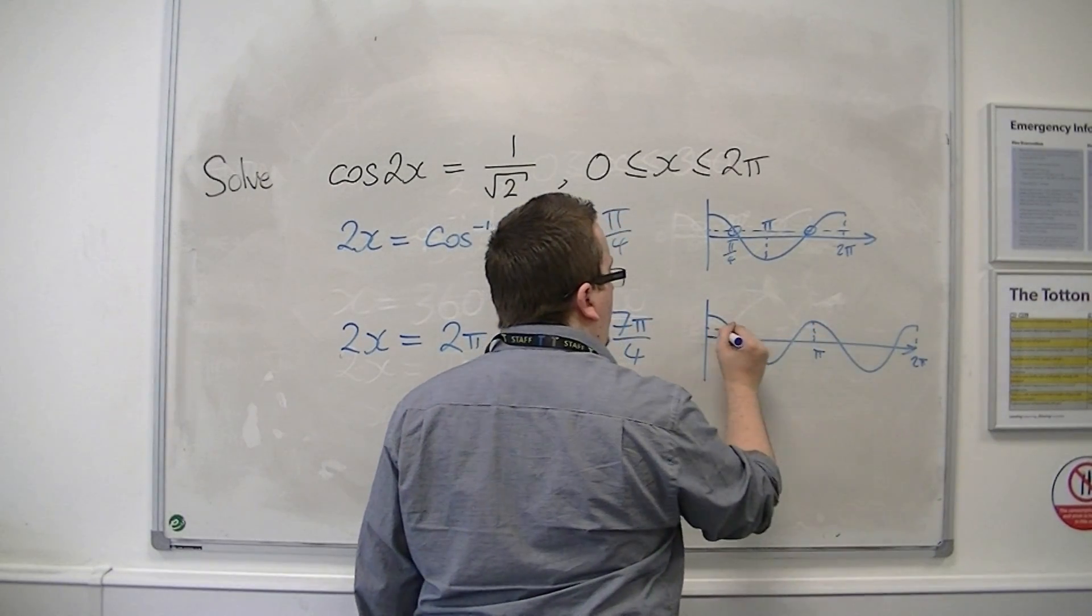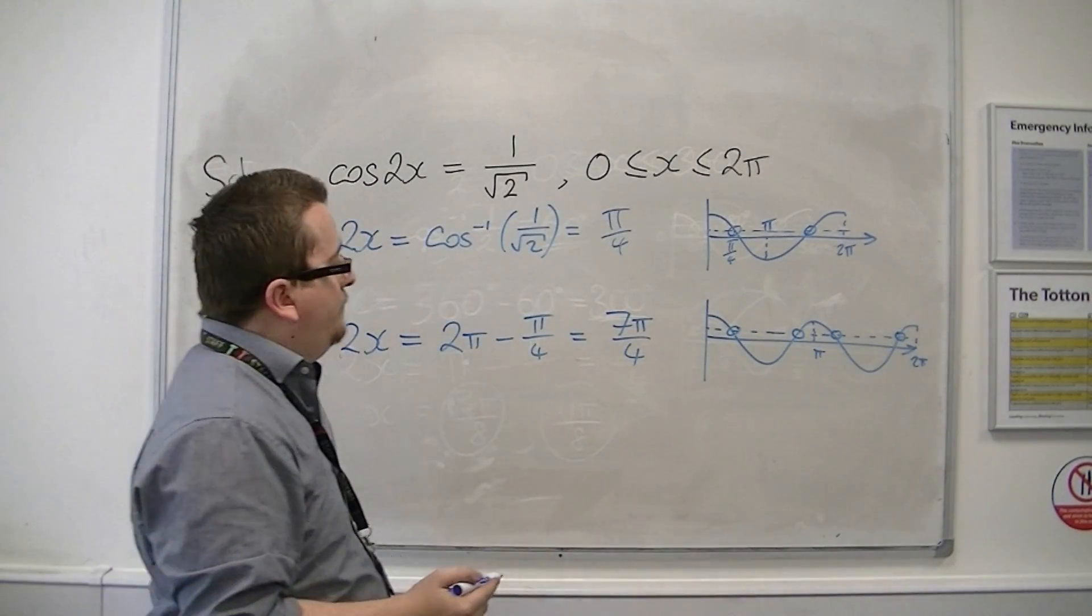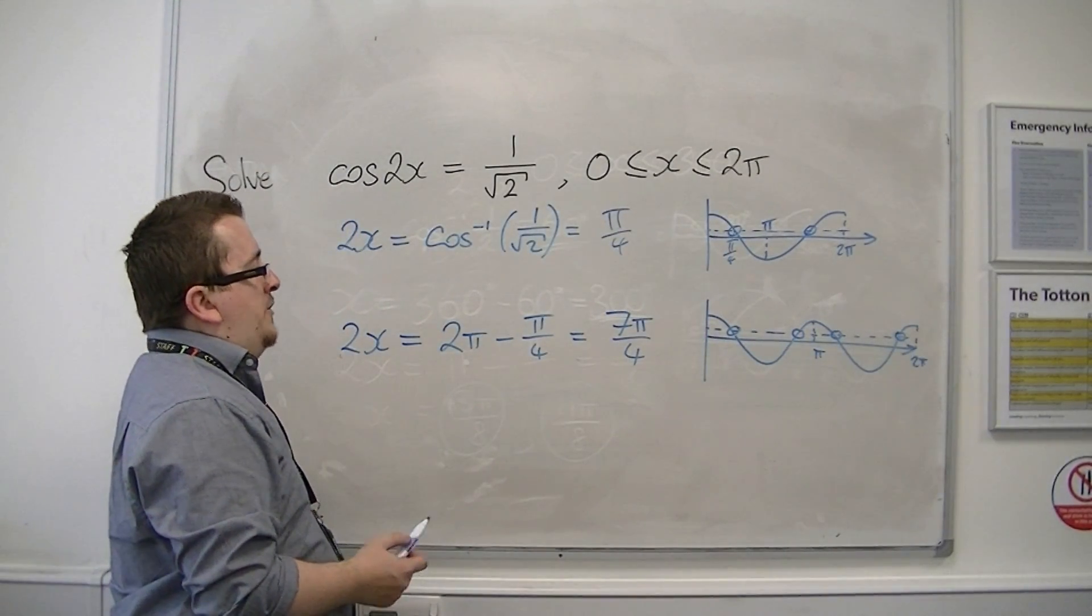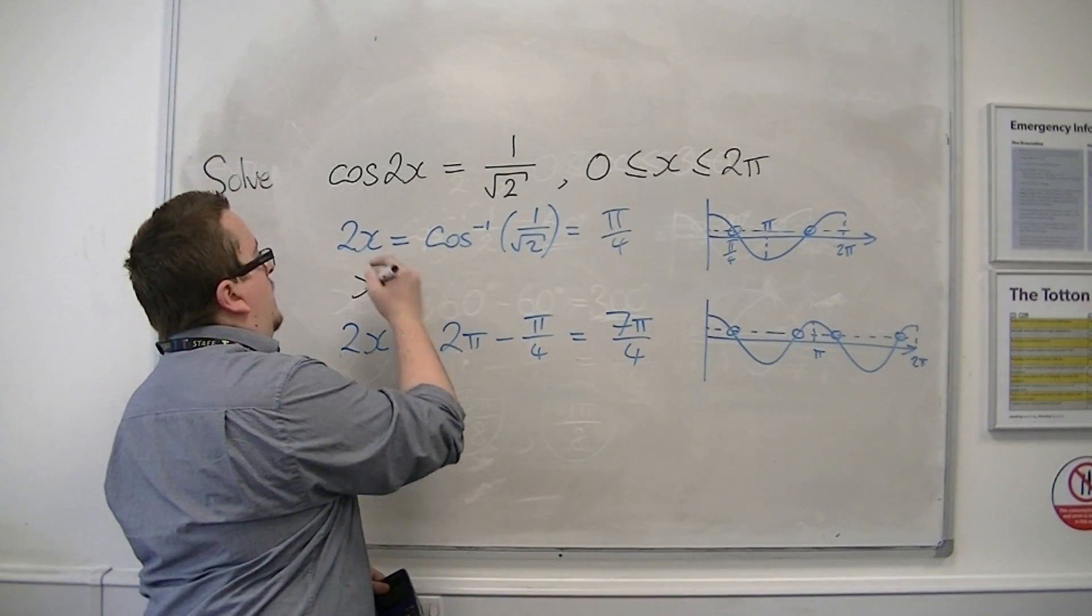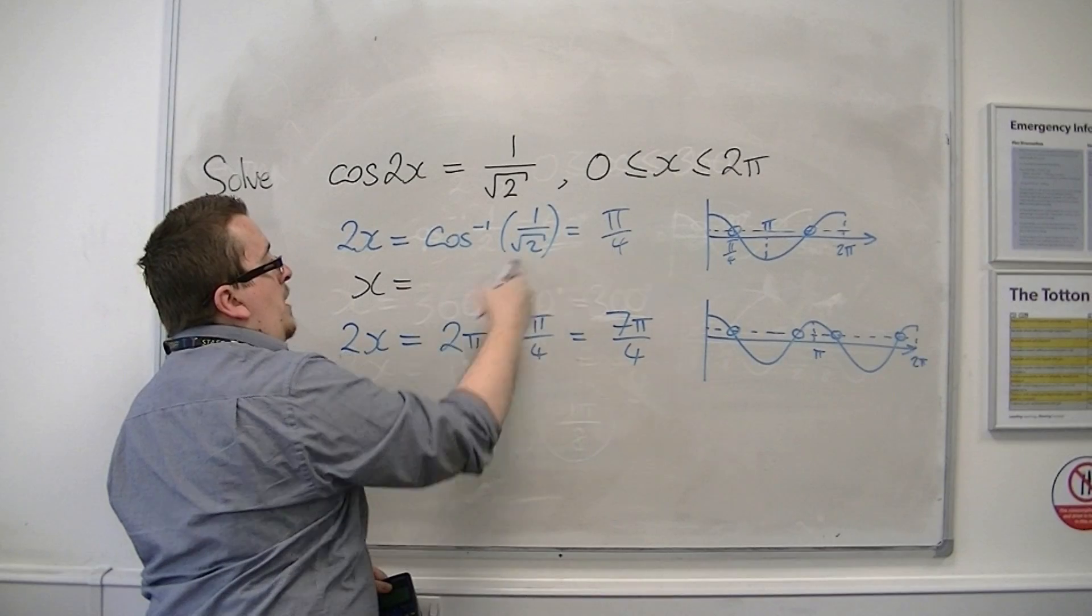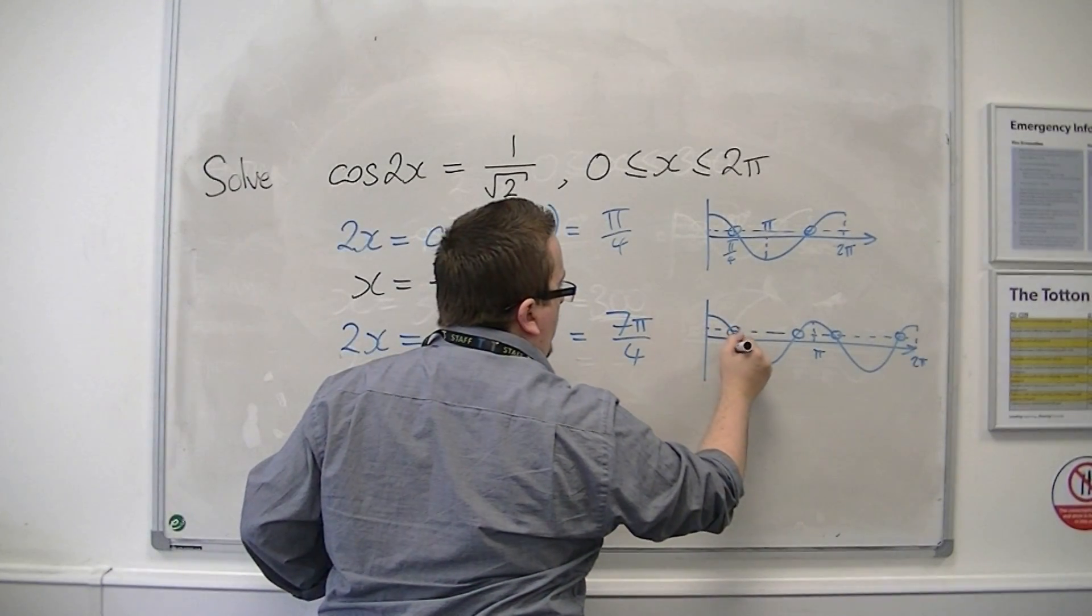now this is what the cosine curve would look like for cos of 2x. So you can see that I would be getting 4 solutions there. So I can get the first two by dividing through by 2. So 2x equals pi over 4,